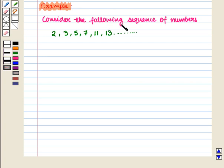Consider the following sequence of numbers: 2, 3, 5, 7, 11, 13 and so on. We say next number in this sequence will be 17.